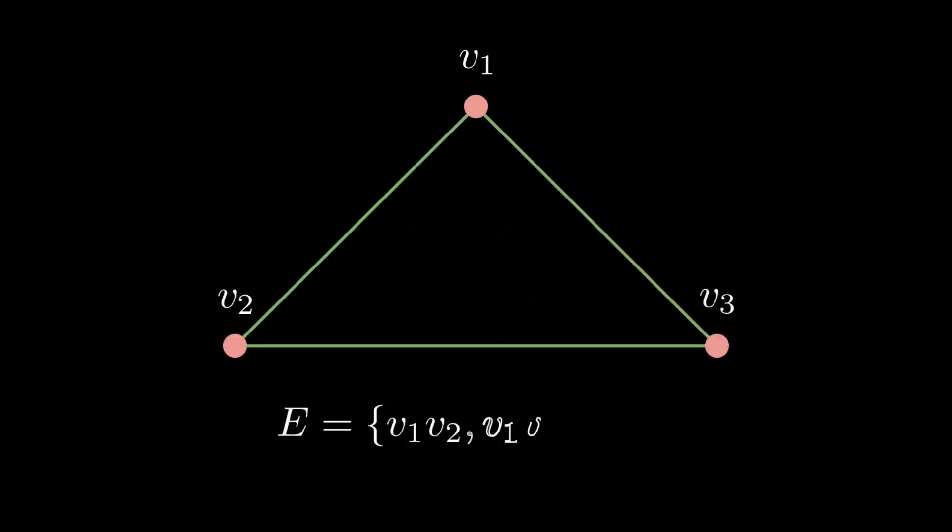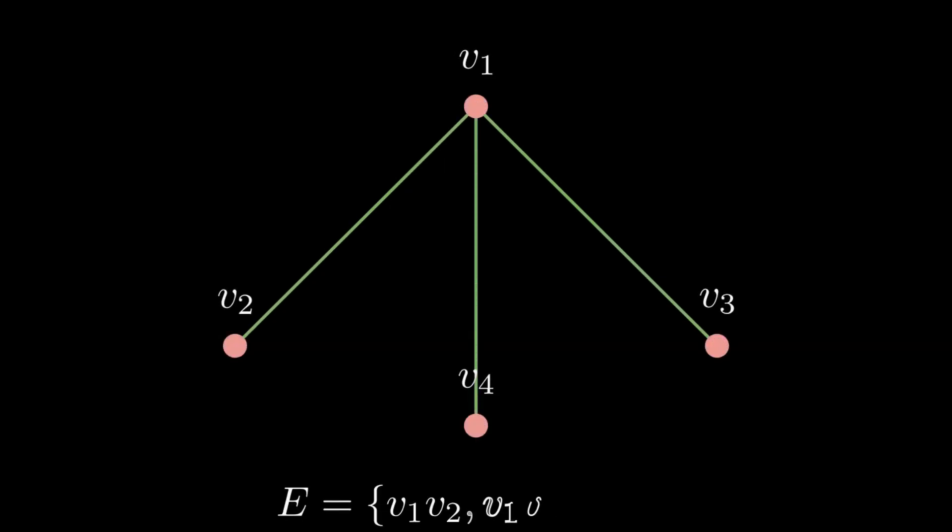For notational convenience, instead of representing an edge as {U, V}, we denote this simply as UV. To see what I mean, in the following examples we write the unordered pair of vertices simply as shown. This makes it easier for us in writing the set of edges.